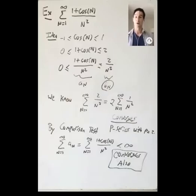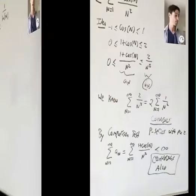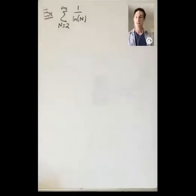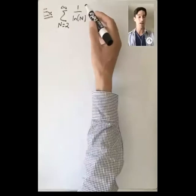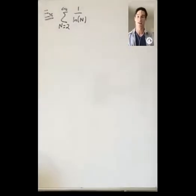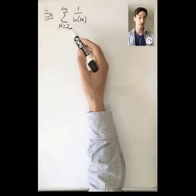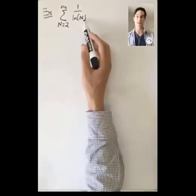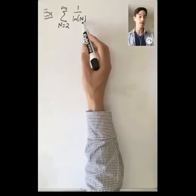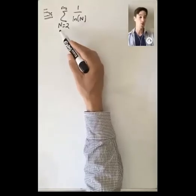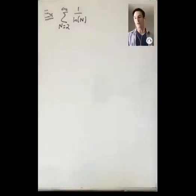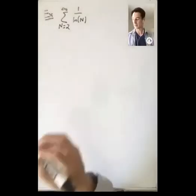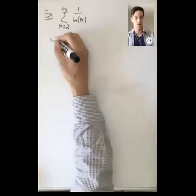For our last example of this video, let's look at the sum from n=2 to infinity of 1 / ln(n). This series starts at n=2 instead of n=1 because ln(1) = 0, so it wouldn't make sense to start at 1.